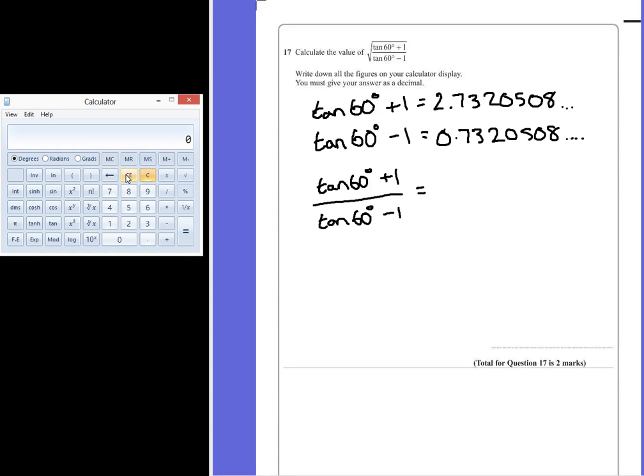Another way is to put the calculation in again just using brackets to ensure that you have a completely accurate number. Double checking that that was the number that we originally wrote down. Dividing by tan 60 take away 1 close brackets which is equal to 3.7320508 etc.